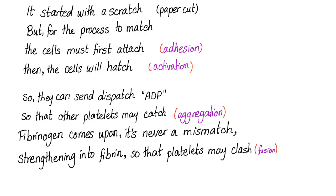Now let's sing together. It started with a scratch, but for the process to match, the cells must first attach. Then the cells will hatch — ADP and thromboxane A2 — so they can send dispatch, so that other platelets may catch.